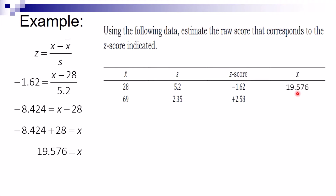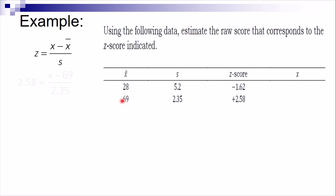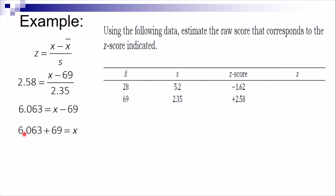For the second item, the z-score is 2.58, the standard deviation is 2.35, and the mean is 69. Multiply 2.58 times 2.35 to get 6.063, then transpose negative 69 to add 69, giving us 75.063 equals x. So x equals 75.063. That covers part one of z-scores — part two will be in the next tutorial video. Good luck and God bless everyone.